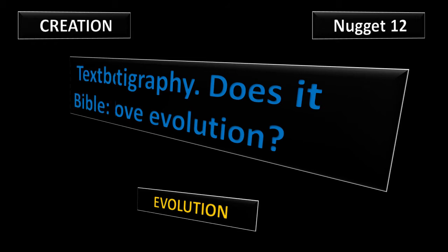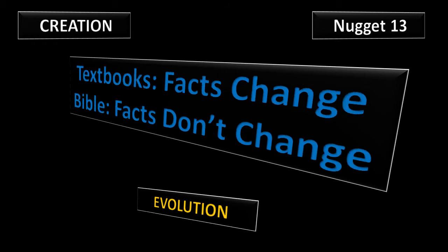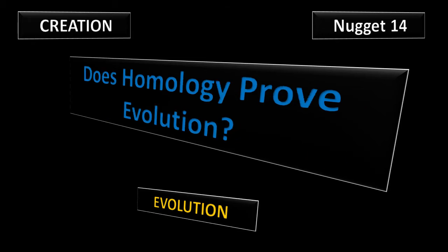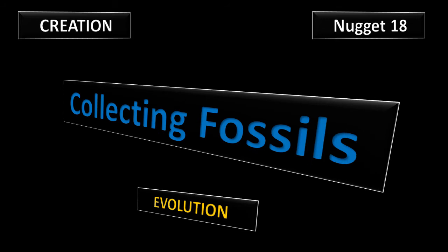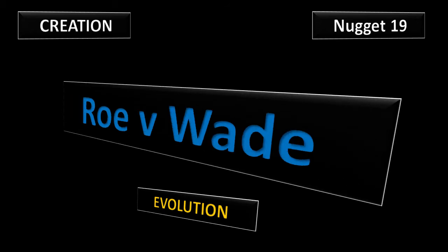Nugget 12: It's about stratigraphy. Does it prove evolution when you drive through road cuts and see all the dirt layers? What does stratigraphy prove? Evolution or a flood? Nugget 13: Textbooks. Their facts change. The Bible. Facts don't change. Nugget 14: Does homology prove evolution? What on earth is homology? Find out in Nugget 14. Nugget 18: Collecting fossils. Where can you collect fossils? Where do we collect fossils? How do I collect fossils?